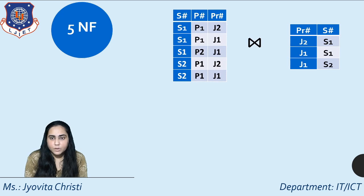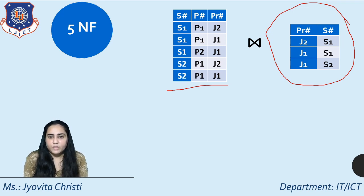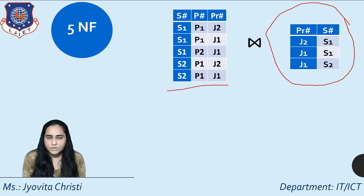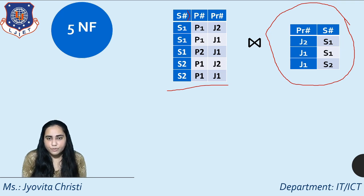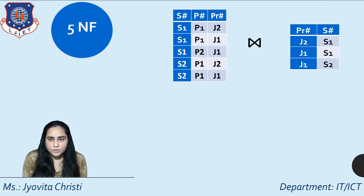Next we take a natural join of this resulting table with the third decomposed part, which contains project number and supplier number. When more than one column is common between two tables, the natural join is performed on all common columns. Here both supplier number and project number appear in both tables, so the join is performed on both.